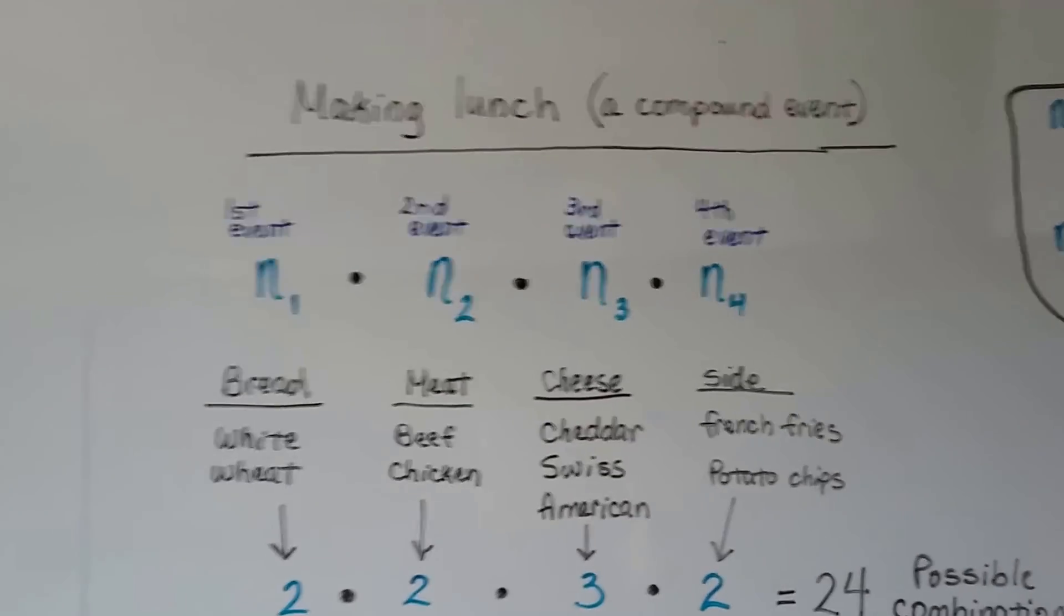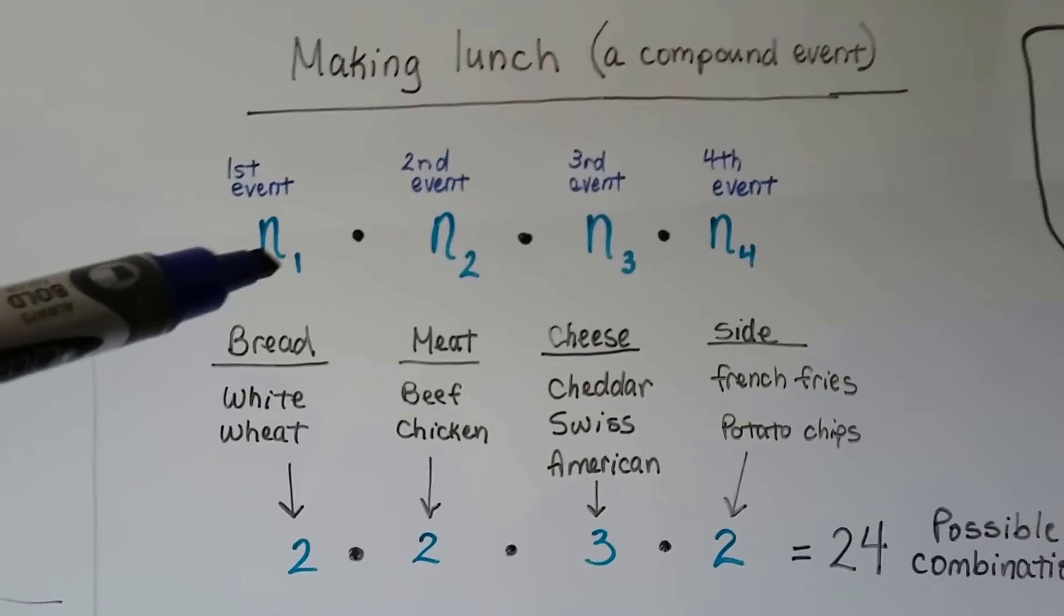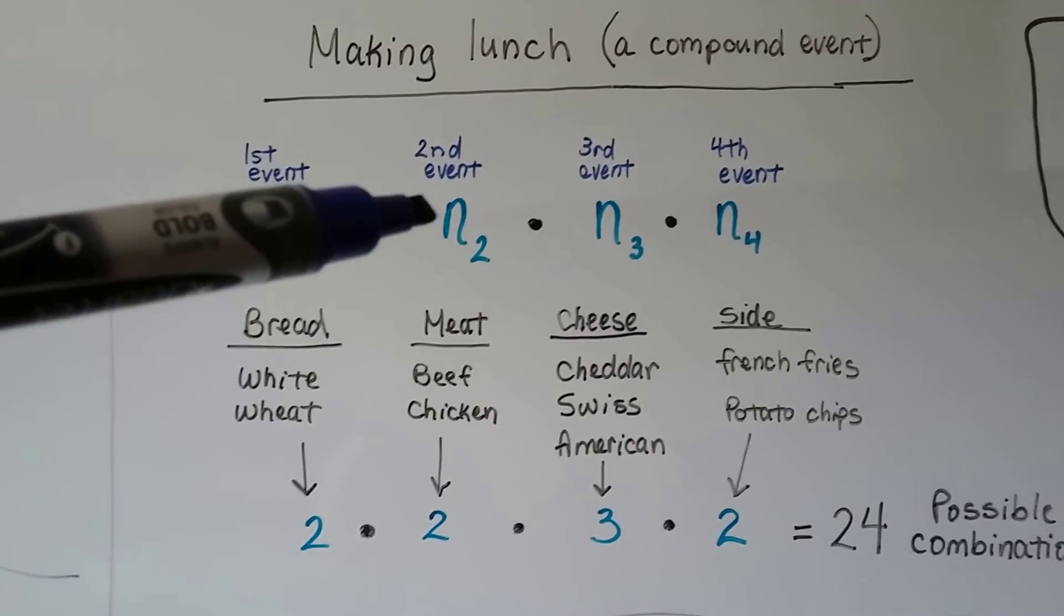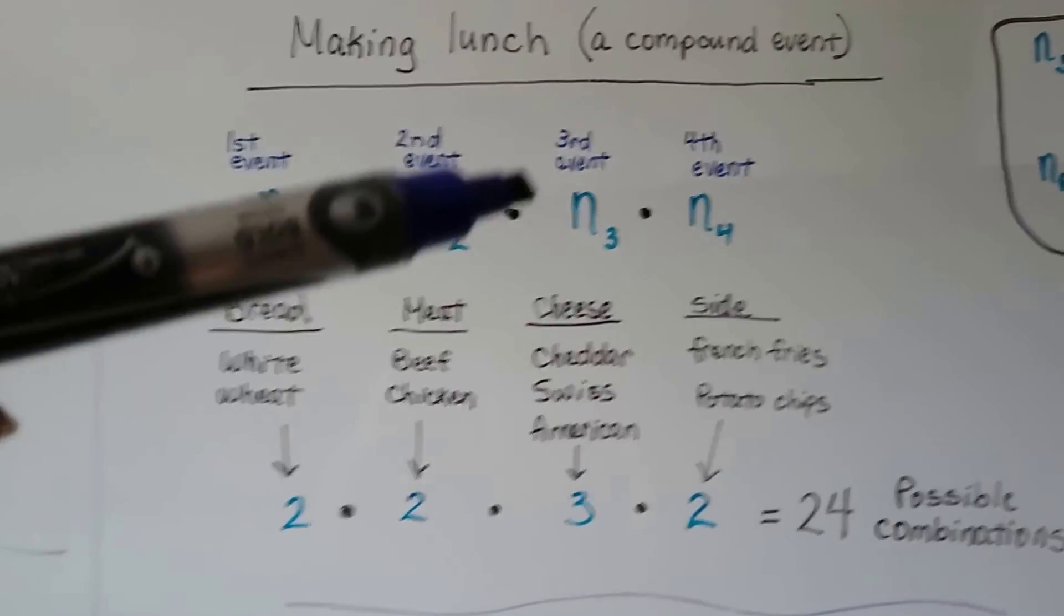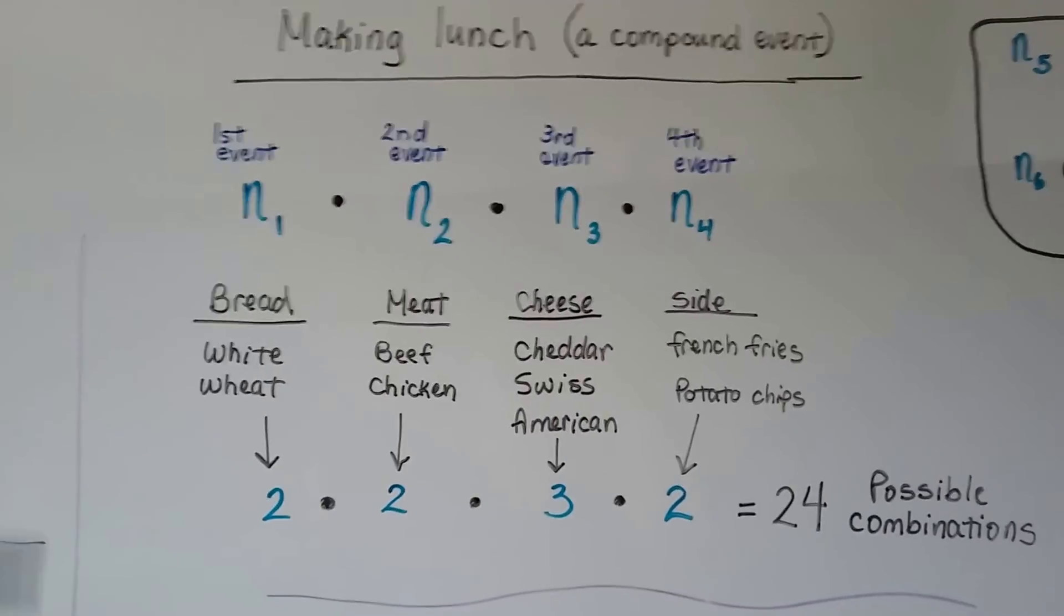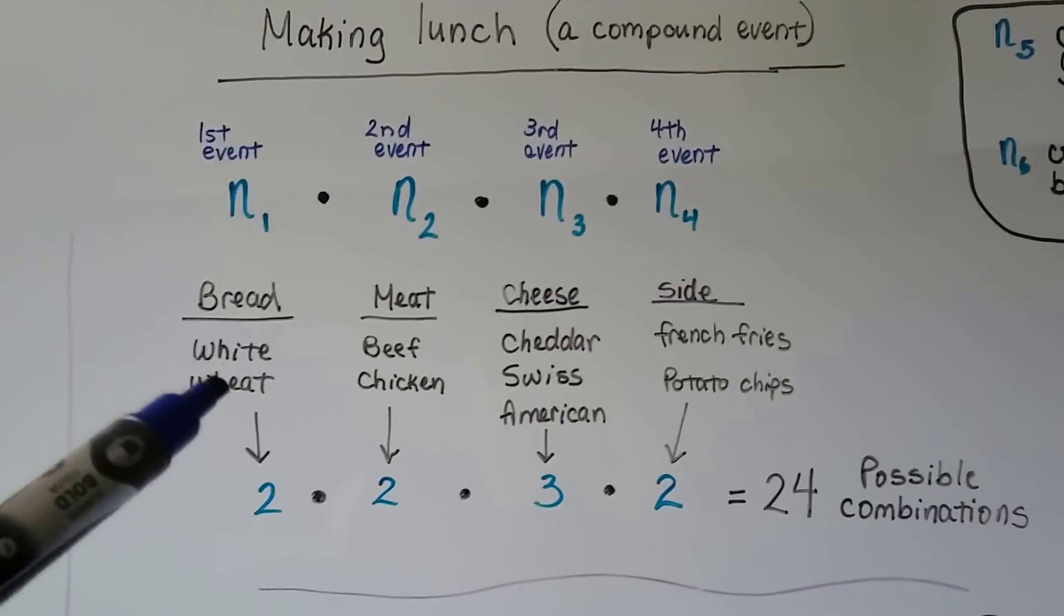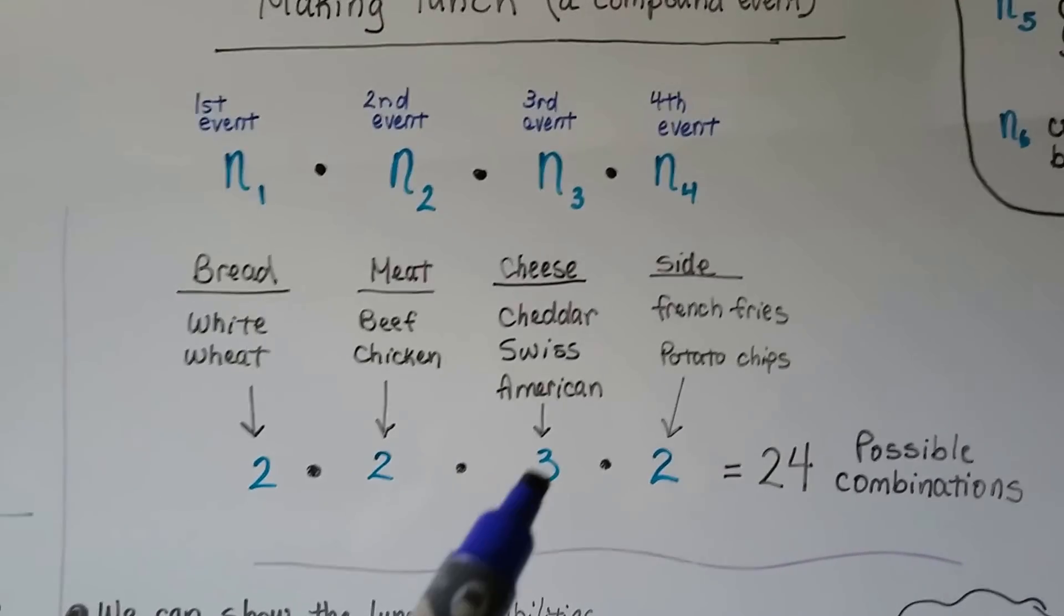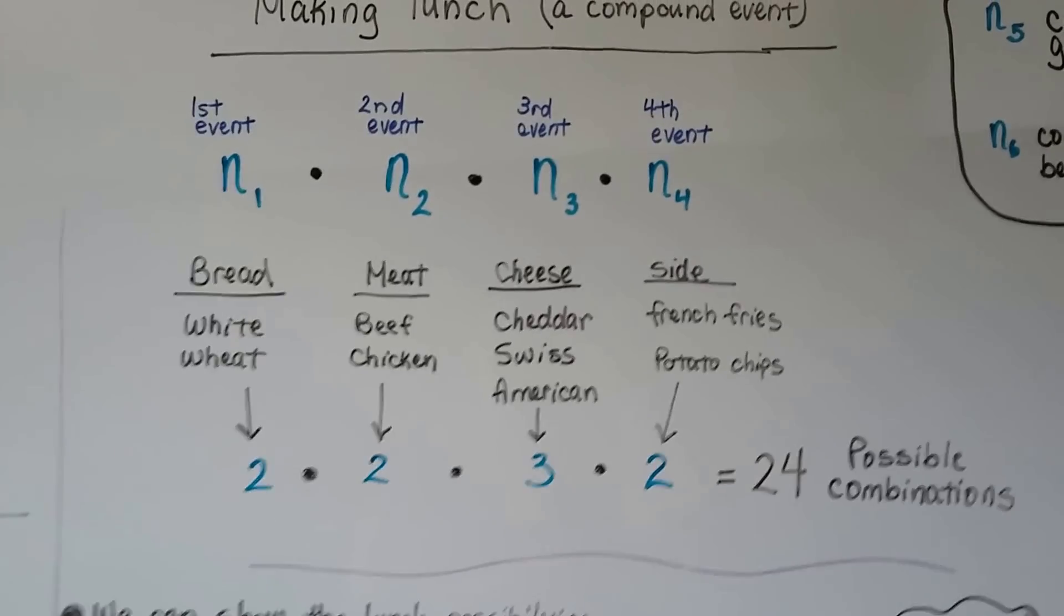Now here we're going to be making lunch. This is going to be a compound event. Our first event, n sub 1, is going to be the bread. Is it going to be white or wheat bread? The second event is going to be n sub 2. Is that going to be, for the meat, beef or chicken? The third event is going to be the cheese. It's going to be cheddar, Swiss or American. And the fourth event is going to be the side, french fries or potato chips. There's 2 here. There's 2 here. There's 3 here. And there's 2 here. 2 times 2 is 4. Times 3 is 12. Times 2 is 24. So there's 24 possible combinations.